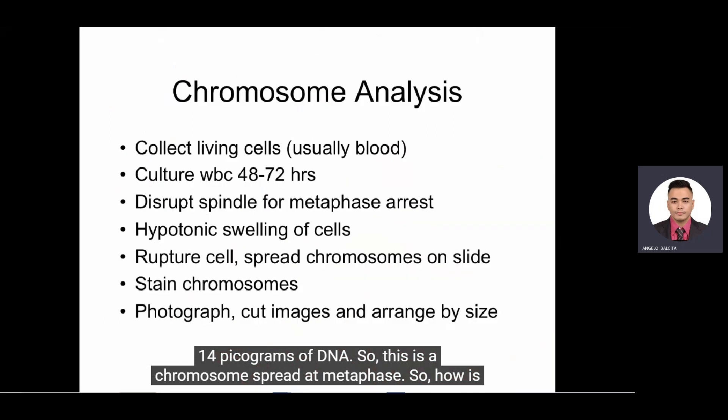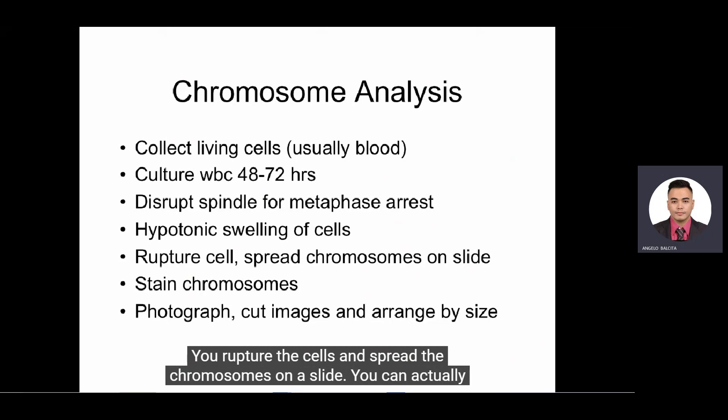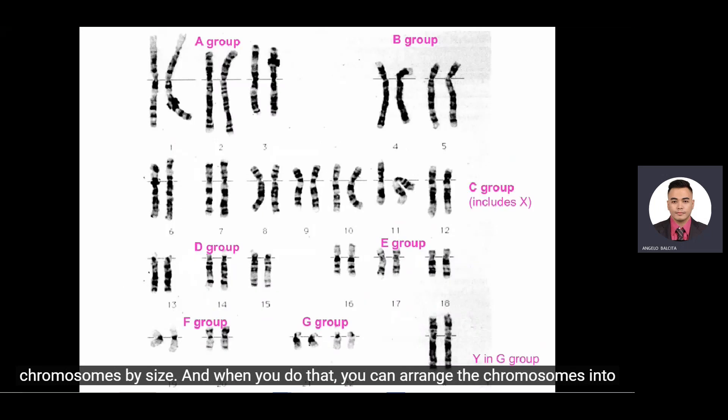This is a chromosome spread at metaphase. How is this done? You usually collect living cells — they're usually cultured from blood. You culture the white blood cells for 48 to 72 hours, you disrupt the spindle usually with a drug like colcemid, you swell the cells hypotonically, you rupture the cells and spread the chromosomes on a slide. You can actually stain the chromosomes, photograph them, cut out the images, and arrange the chromosomes by size.